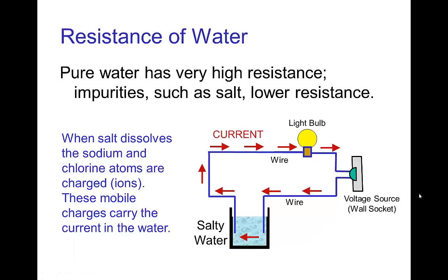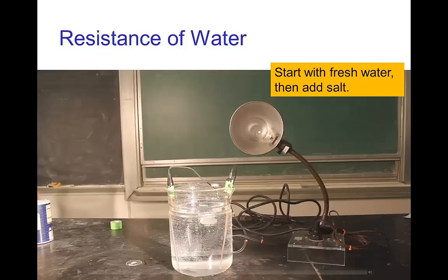Let's look at an example of current through a circuit where we're going to be changing the resistance. We start with a circuit where part of the current has to go through a large beaker of water. Pure water has a high resistance, so we don't get a lot of flow when the current has to pass through ordinary water. But if we add salt, the resulting sodium and chlorine atoms are charged ions and they allow the current to flow easily through the water. In other words, salt water has a much lower resistance than fresh water.